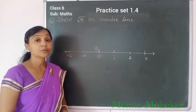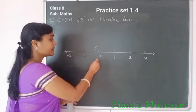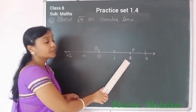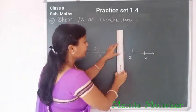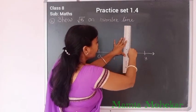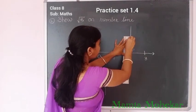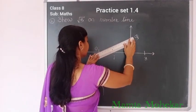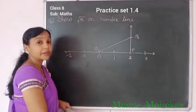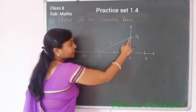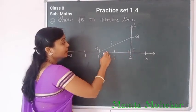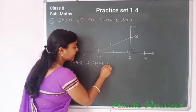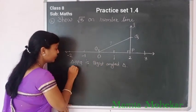Now we see example 2: how to show root 5 on a number line. First you draw a number line. Take center O, and at unit 2 call this point P. Draw a perpendicular at point 2, because we want to show root 5. Draw the perpendicular line, take 1 cm distance, and call this point Q. Then join OQ. Line L is perpendicular to OP, so there is a 90 degree angle, making OPQ a right angle triangle.